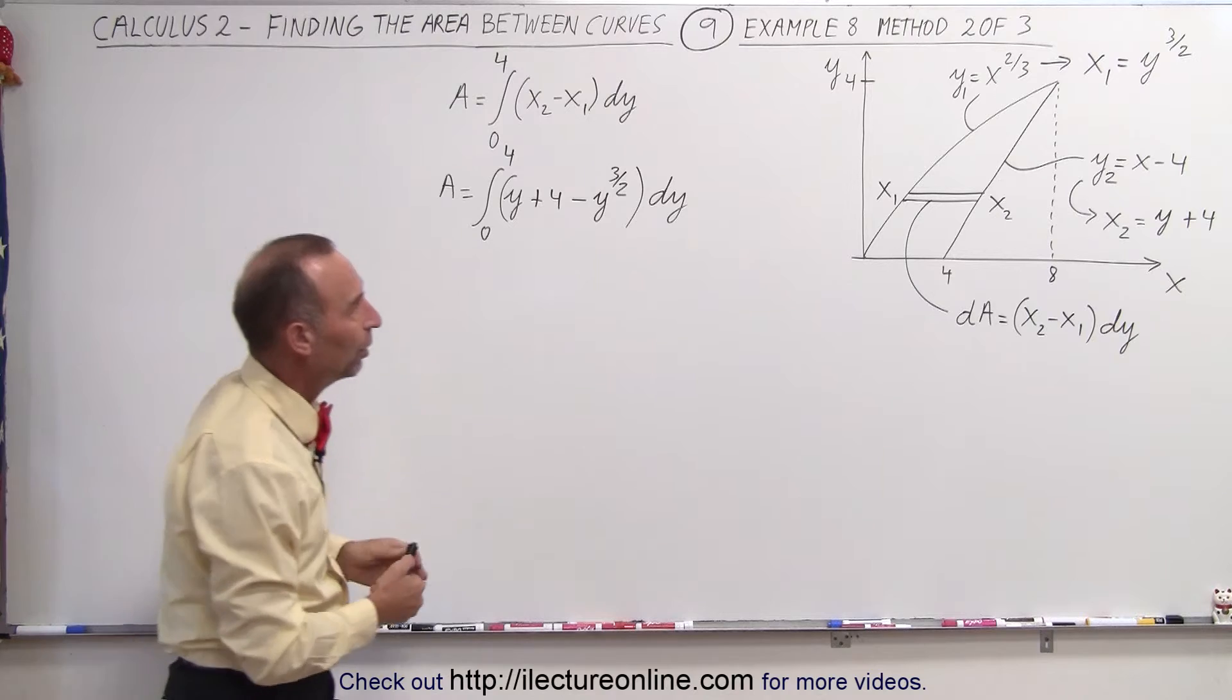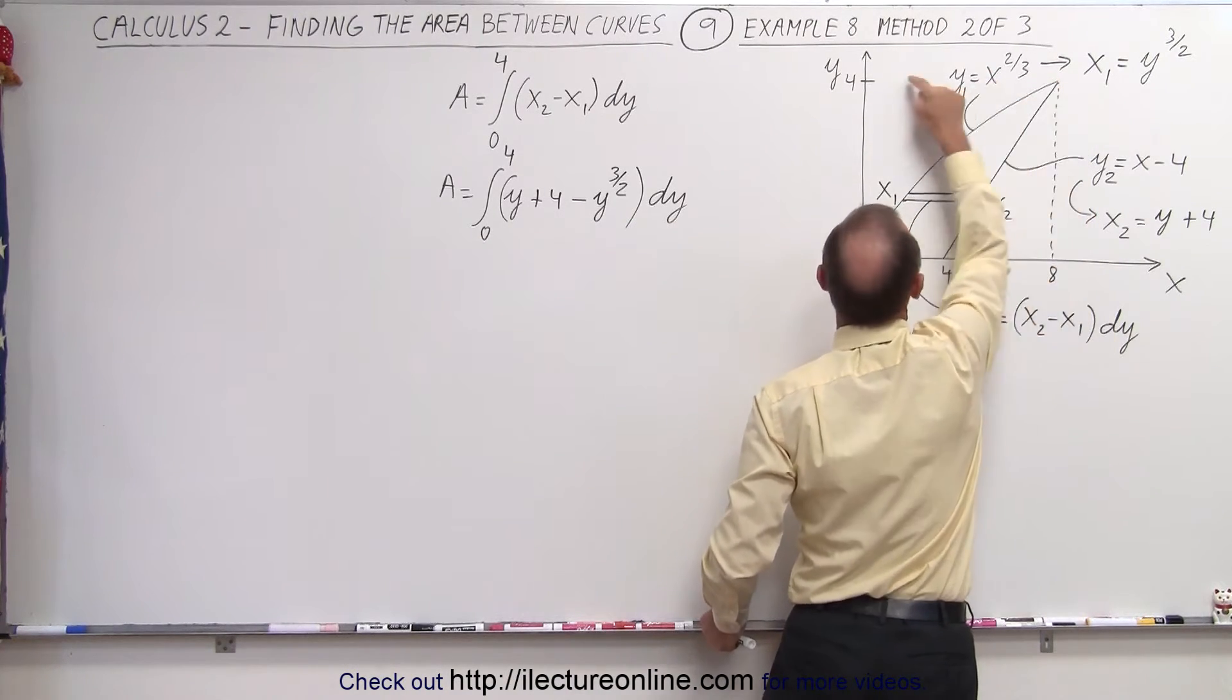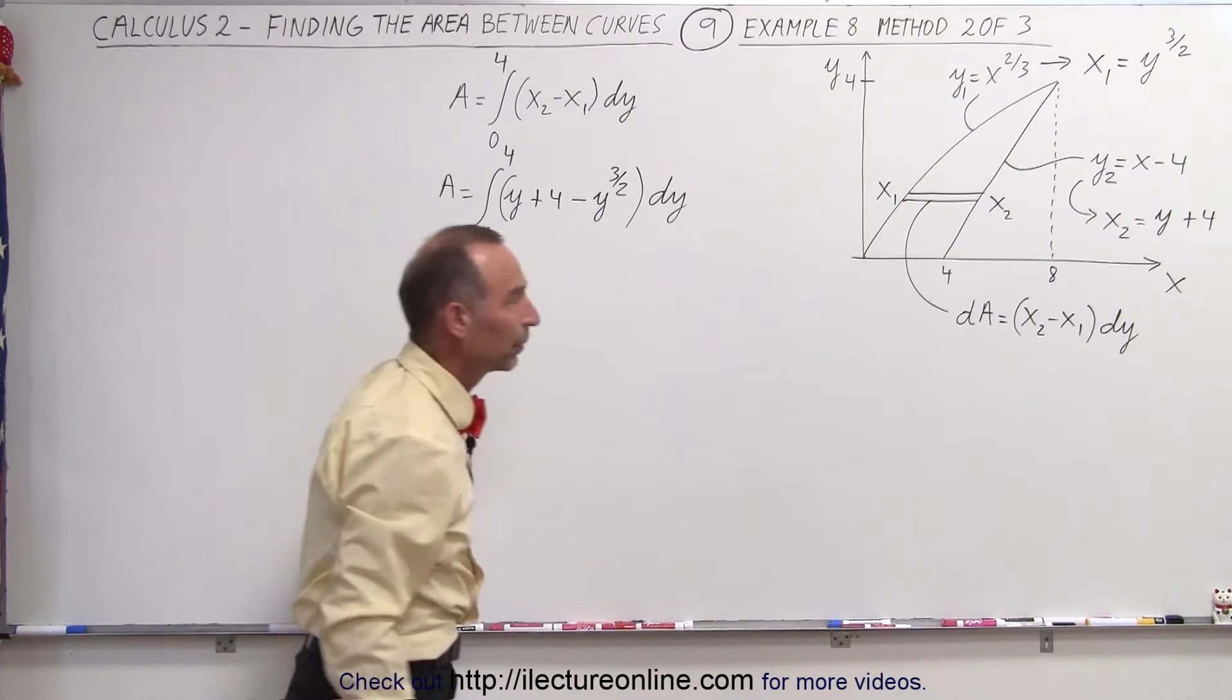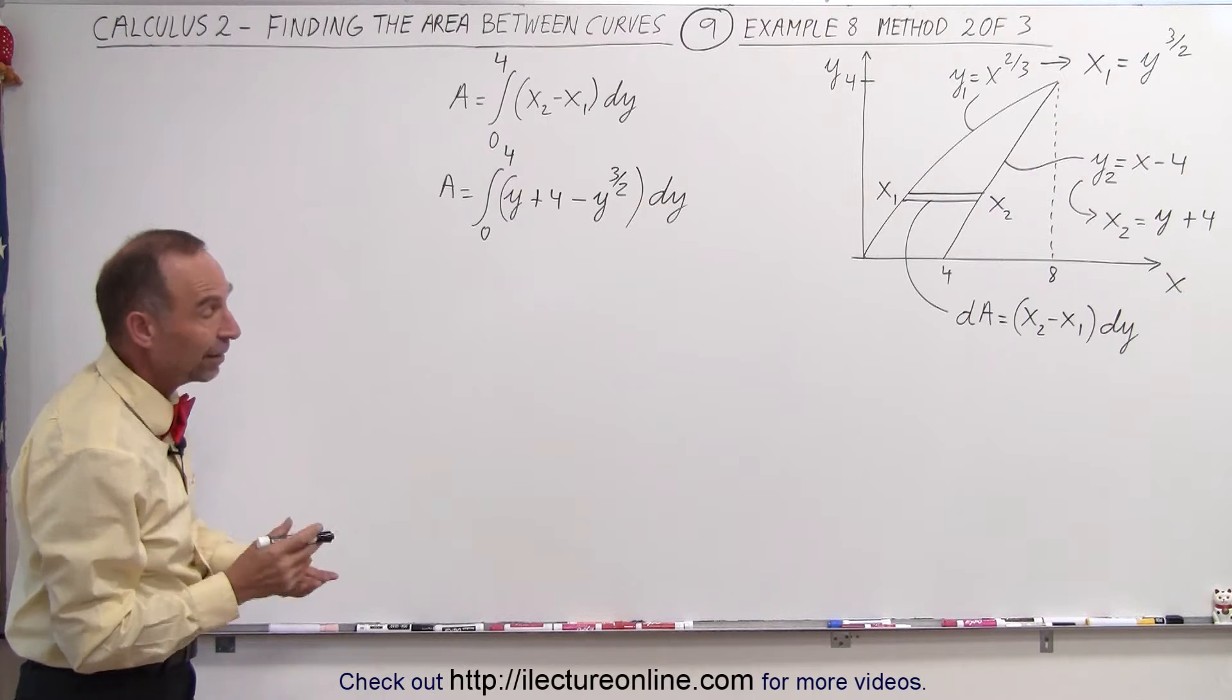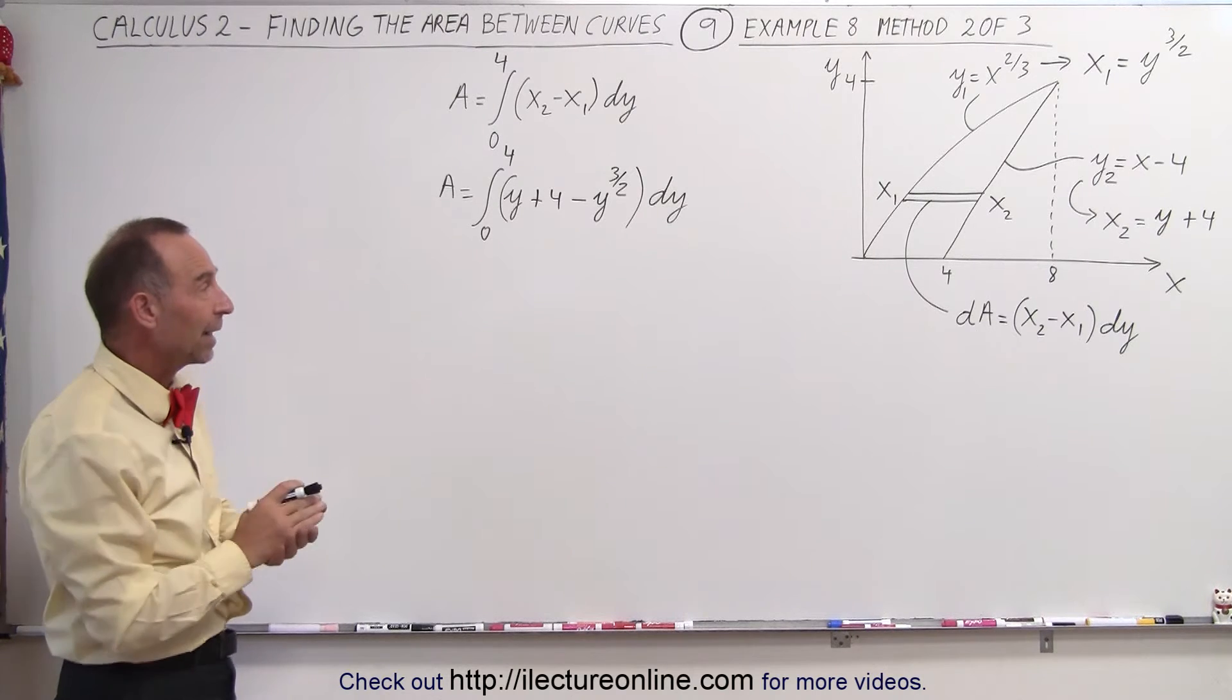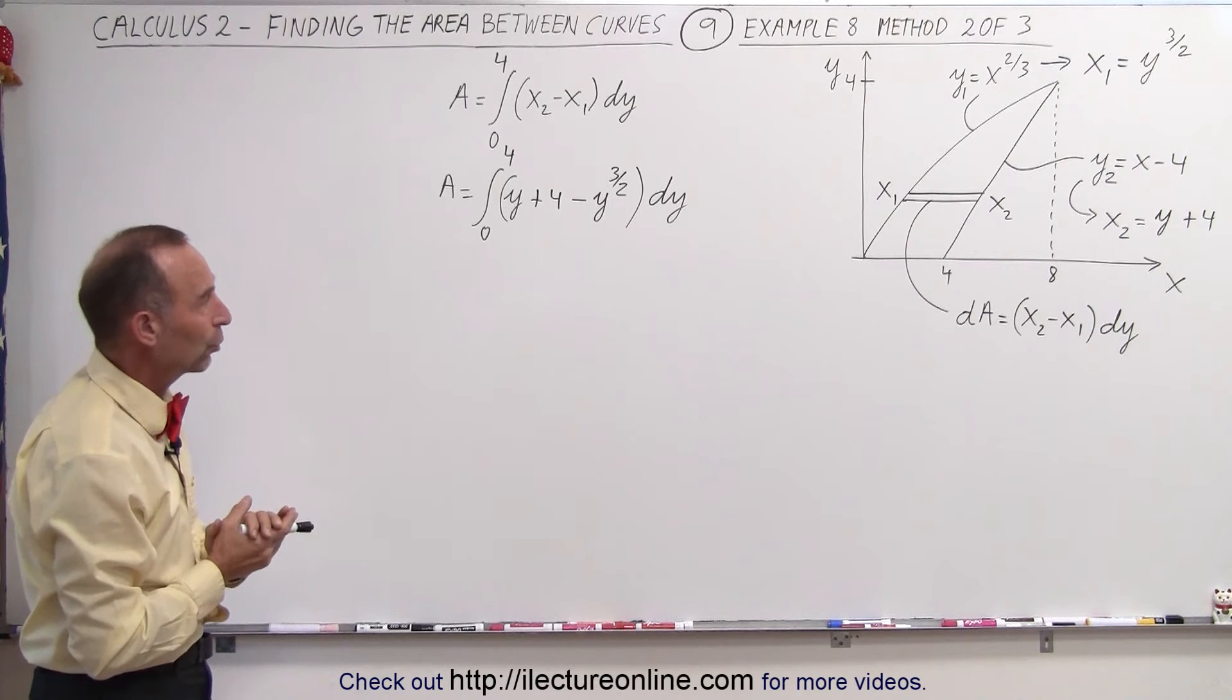But now our limits will be y limits instead of x limits and the limits will be from 0 to 4 because right here where the two functions meet that's where x equals 8 but that's where y equals 4. So let's go ahead and calculate this integral to see what we get and remember the value that we had in the last video was 56 divided by 5 for that area between the two curves.